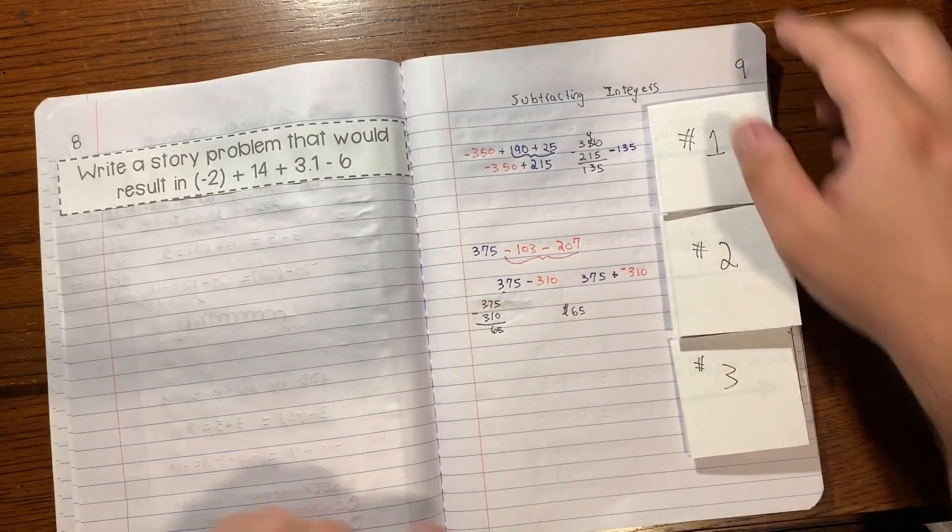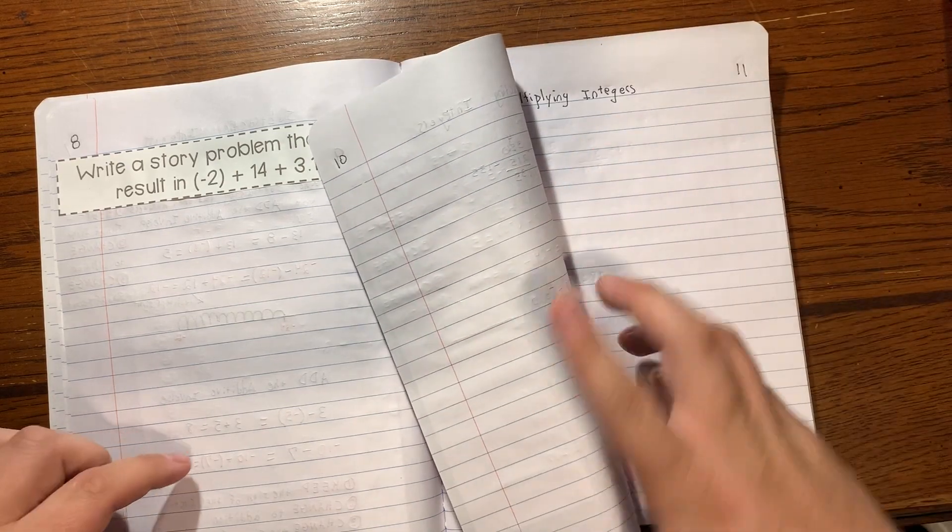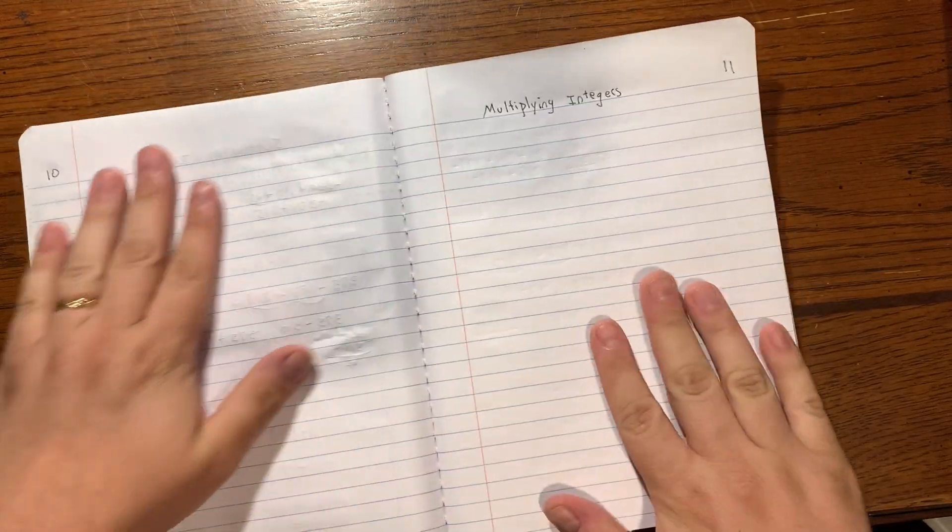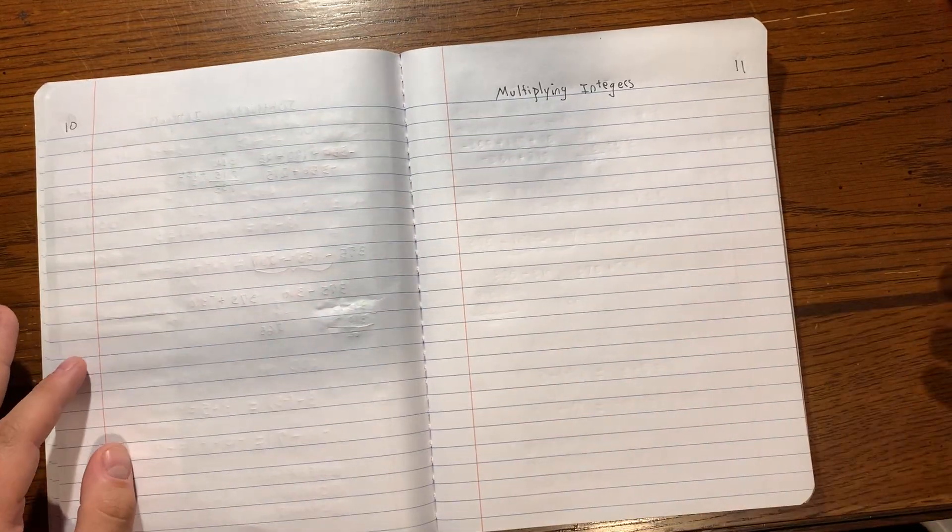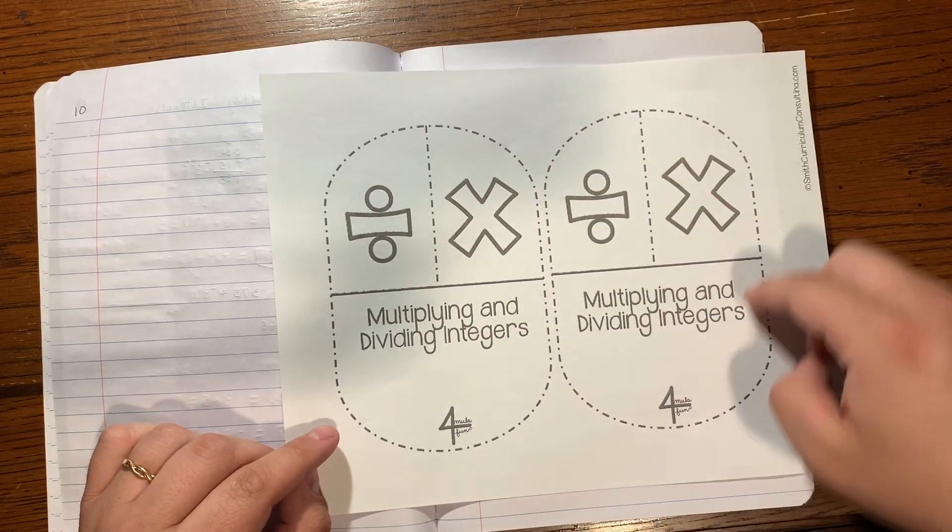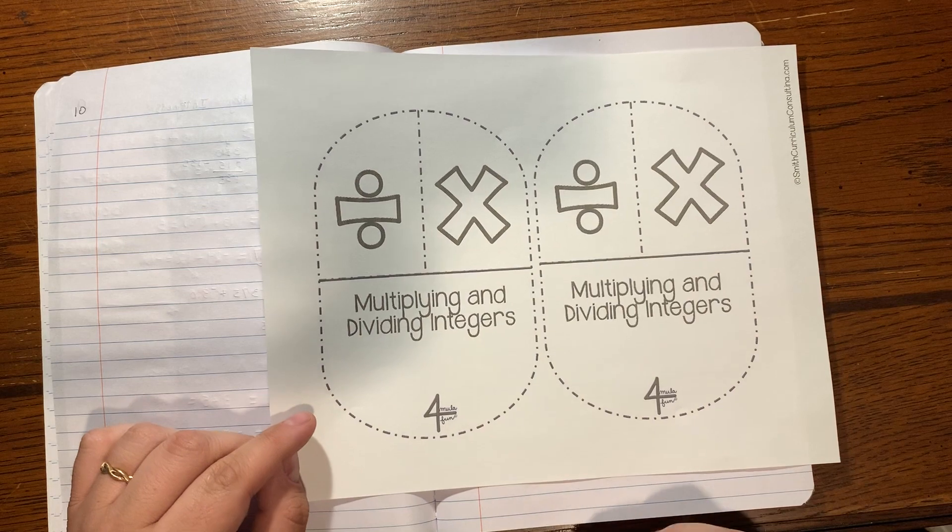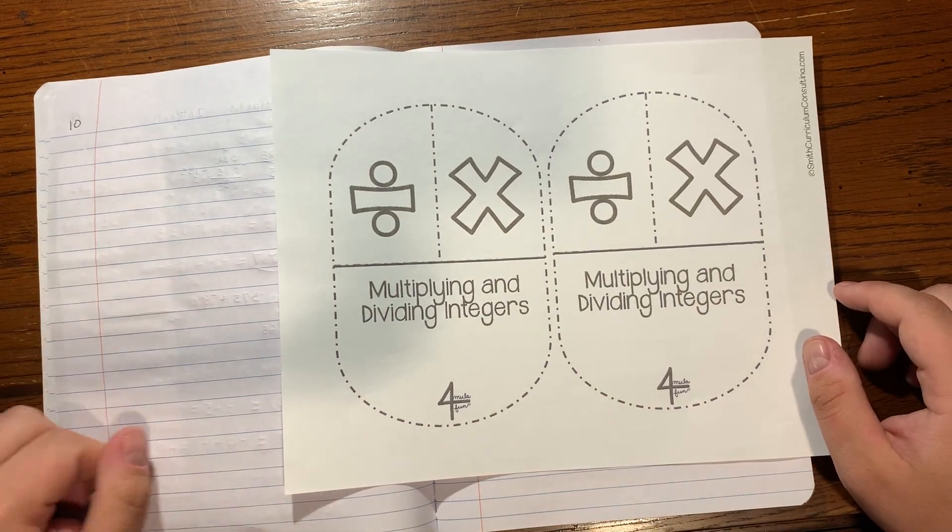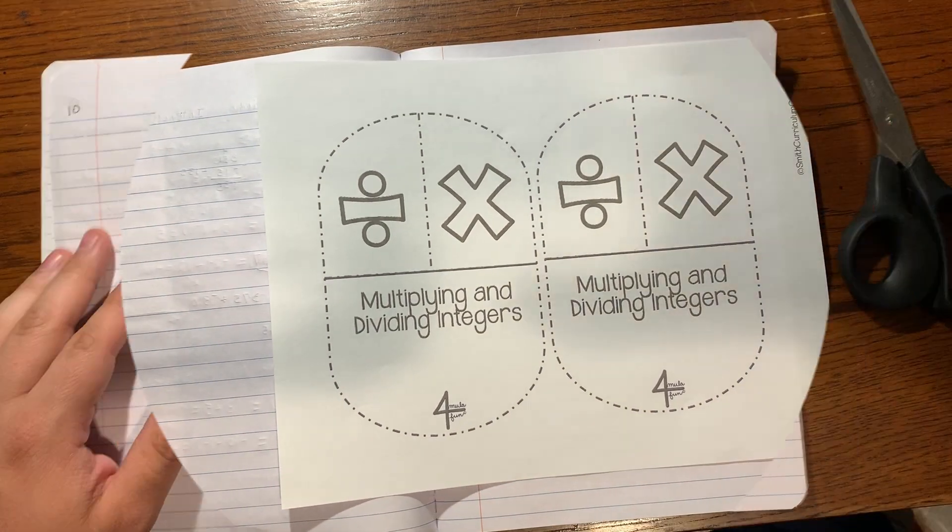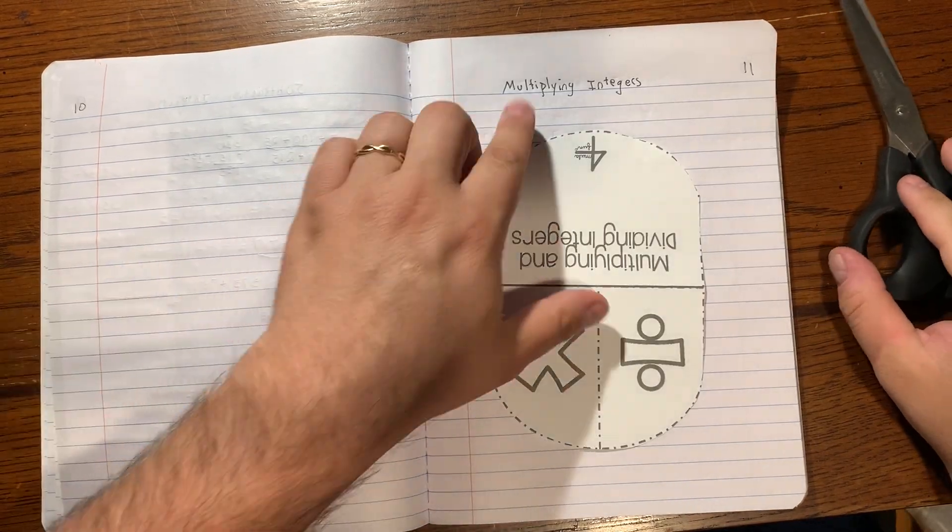It should only take two pages. If it takes more for you, that's fine, but let's get started with multiplying integers. First thing you're going to do is cut out these notes here. Then we'll do some example problems on the right side, and I'll give you some problems to do on the left side.